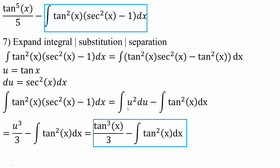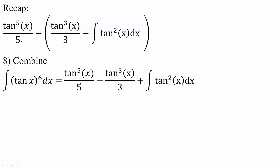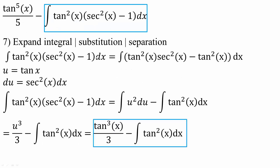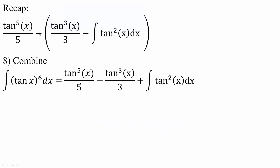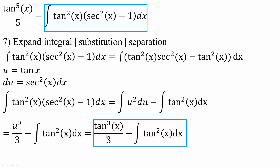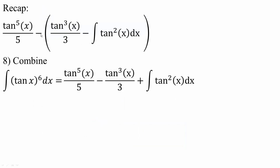The integral of u squared du is u cubed divided by three, minus the remaining piece. Replacing u with tan x gives tan cubed x divided by three, minus the integral of tan squared x dx. So combining what we have: tan raised to the fifth x divided by five, minus tan cubed x divided by three, minus the integral of tan squared x dx. Expanding the negative gives us plus the integral of tan squared x dx.